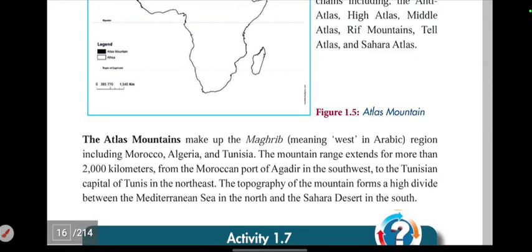The Atlas Mountains make up the Maghreb, meaning 'the west' in Arabic. The mountain range extends more than 2,000 kilometers from the port of Agadir in Morocco in the southwest to the capital of Tunisia in the northeast.